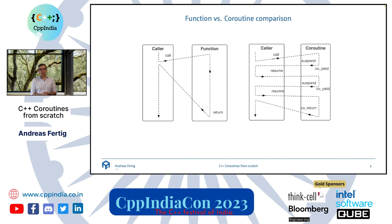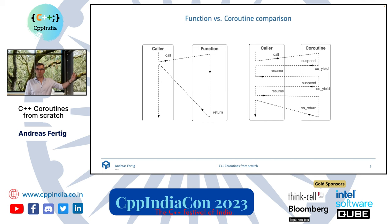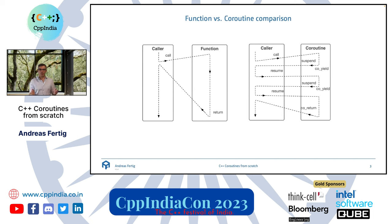Let's come back to C++. Coroutines versus functions — where's the difference before we dive into the technicalities? Here you have the comparison of the control flow of a function compared to a coroutine. A typical caller calls a function, the function runs until it returns, and that gives back control to the caller. Once a function returns, all the variables on the stack get destroyed. The caller can call the function again, but it will start with zero knowledge — it always starts fresh.